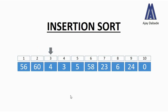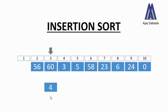Now we have placed 56 at its right position. We will move our pointer to the next position, that is position three. At position three we have the number 4. We take this number and compare it with the left-hand side — with 60 and with 56. Both these numbers are greater than 4, so we shift 60 and 56 one position towards the right. We then place 4 at position one.